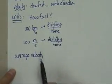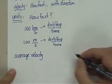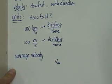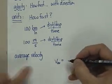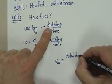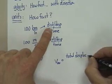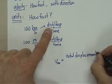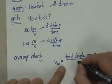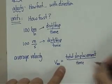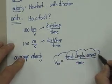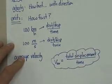So your vague formula is going to be average velocity, which we write as V_AV for average. It's going to be the total displacement, I'll write the whole word out this time, over the time to actually have total displacement occur. That's like your first formula.